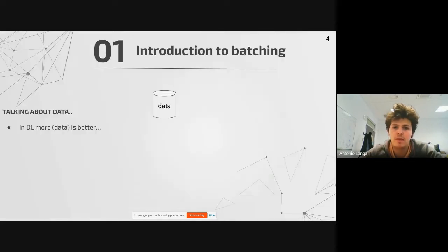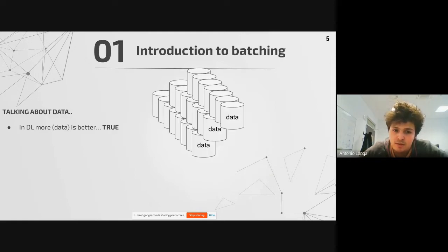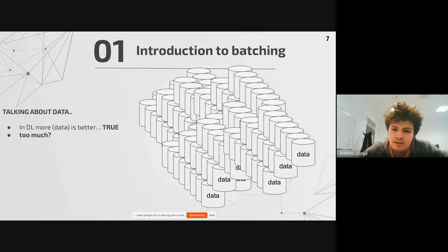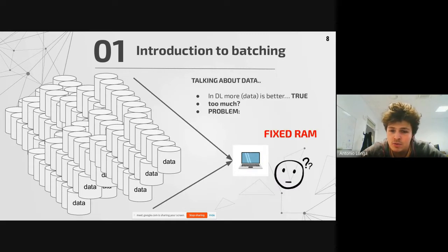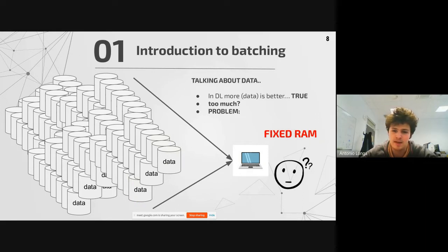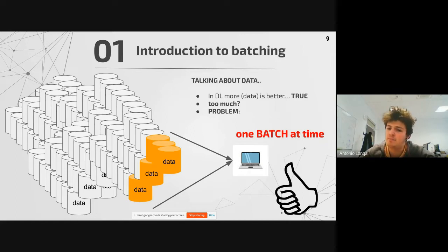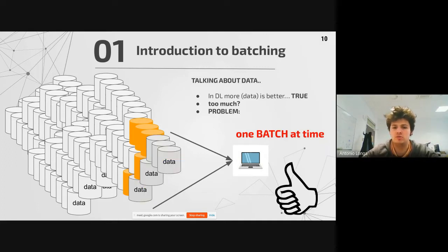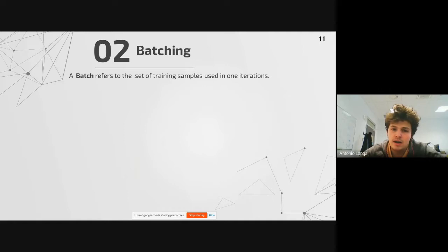Introduction to batching: in deep learning, more data is better — but what can we do when we have too much data? In particular, we're trying to compress a huge amount of data into our RAM, and that's not good because we may not have enough RAM or space. So what we can do is proceed one batch at a time, iterating over batches. This allows us to scale and work with much larger datasets.